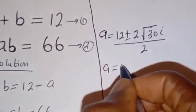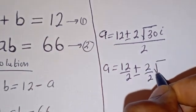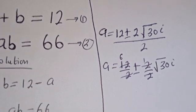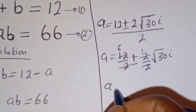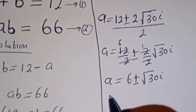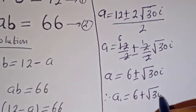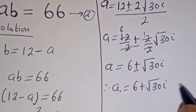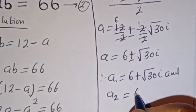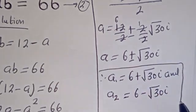Then we have A equals 12 divided by 2, plus or minus 2 divided by 2, times square root of 30 times i. Simplifying: 12 over 2 is 6, and 2 over 2 is 1. So A equals 6 plus or minus square root of 30 i. Therefore, A1 is equal to 6 plus square root of 30 i, and A2 is equal to 6 minus square root of 30 i. These are the values of A.